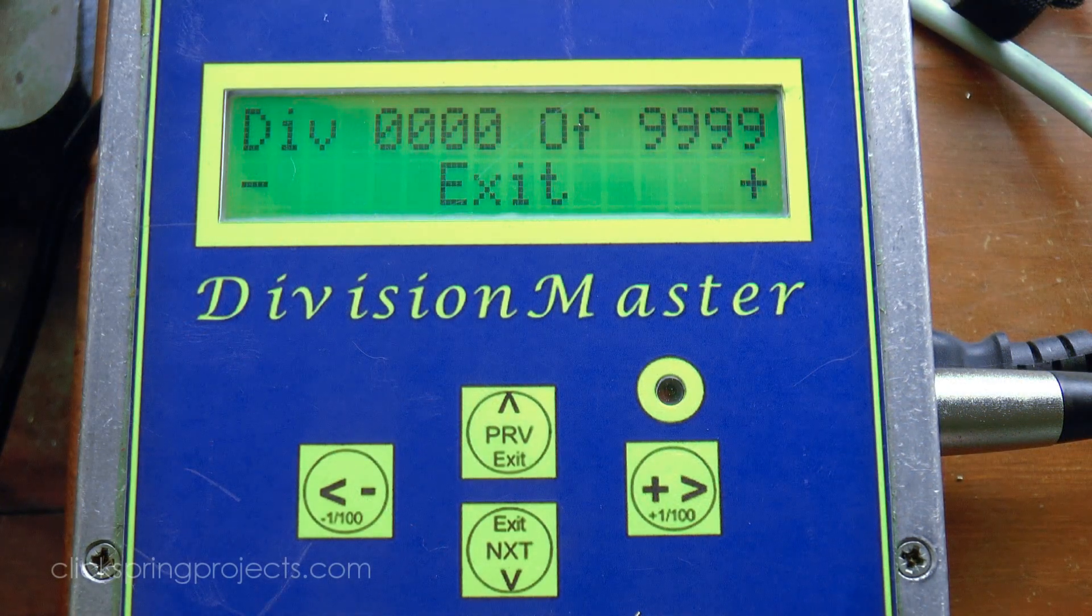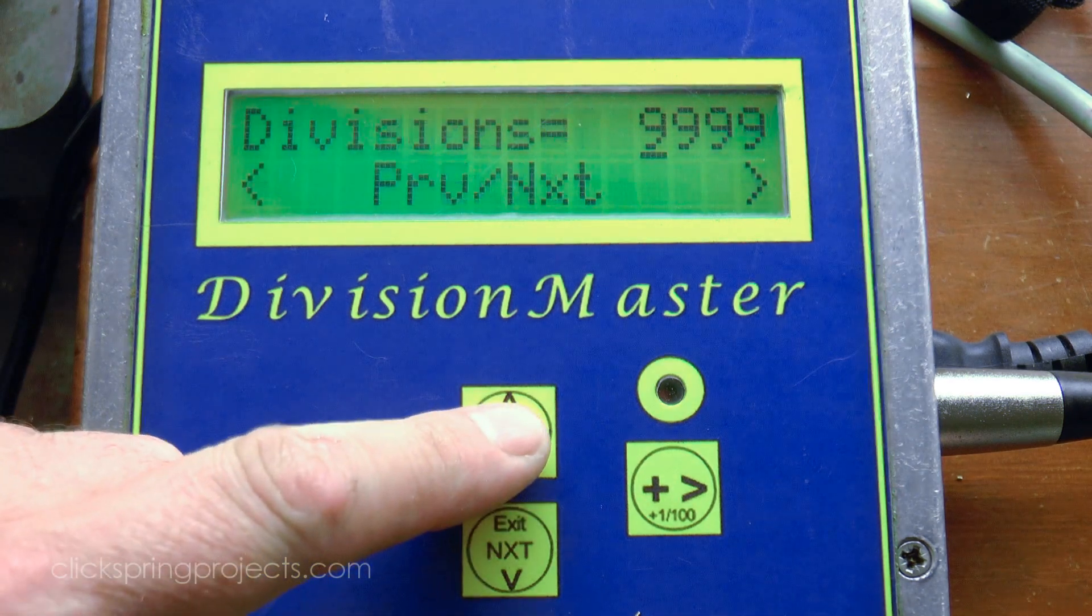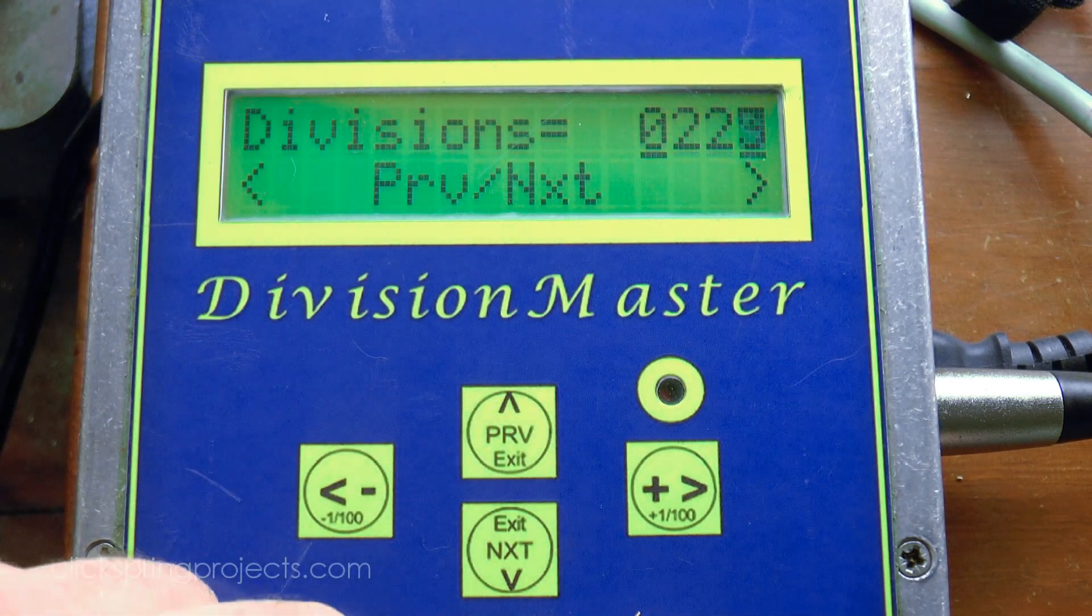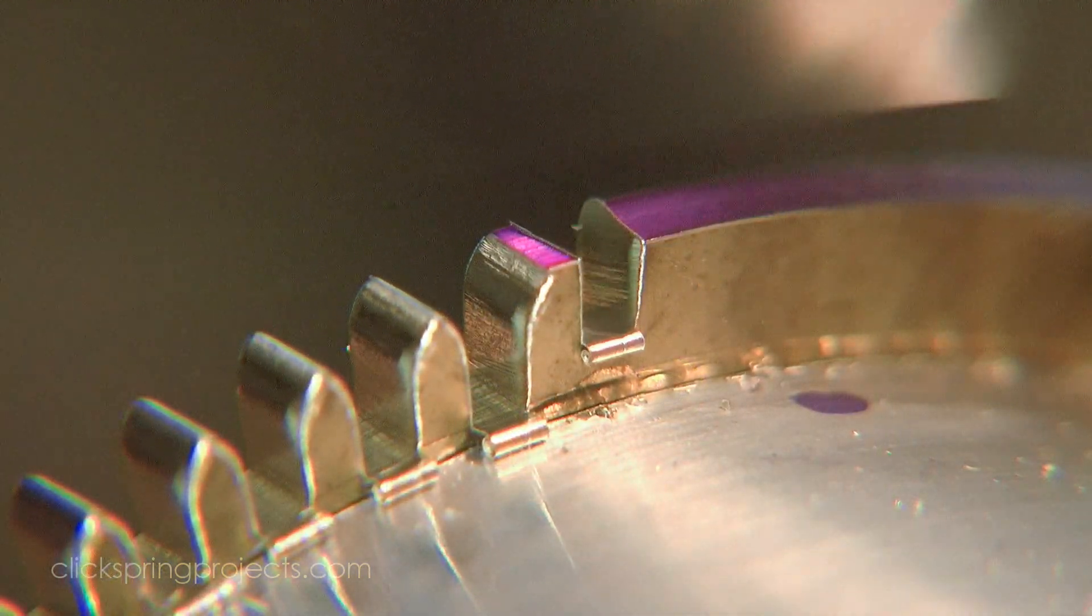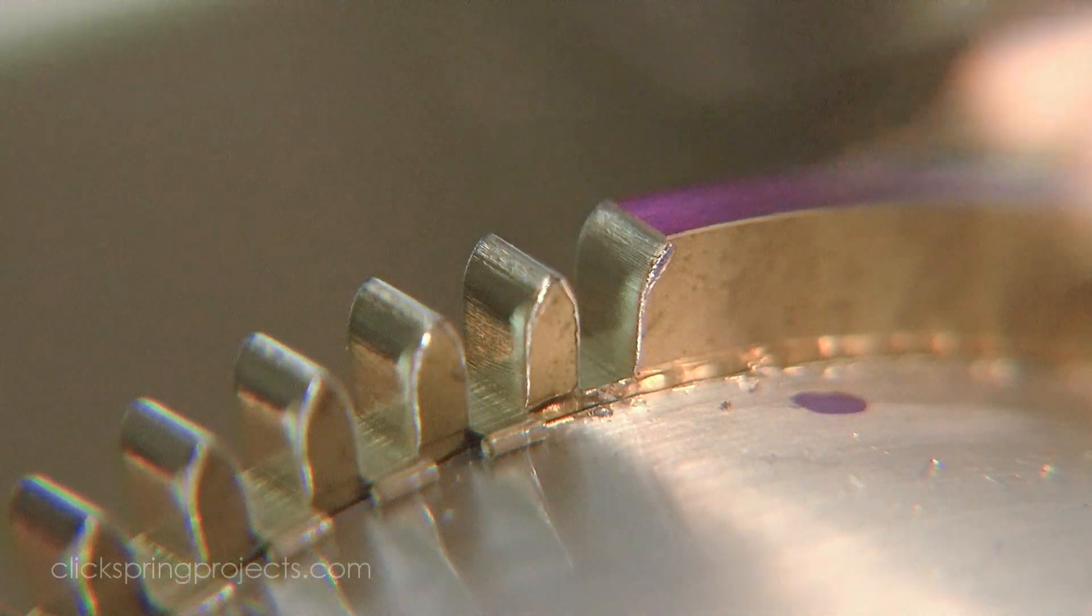But a digital indexer does bring some solid benefits. For one thing, it gives any tooth number that you could want. That was my main motivation for getting it. Large numbers and prime numbers will occasionally present a problem depending on your dividing method. This gadget makes any number a non-issue.